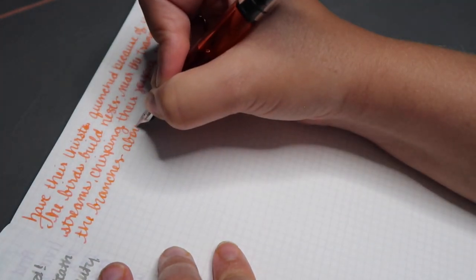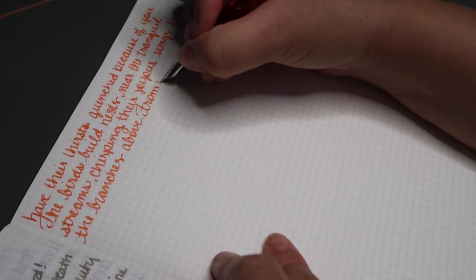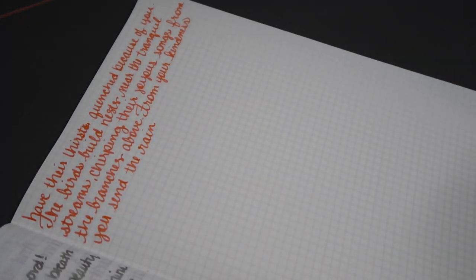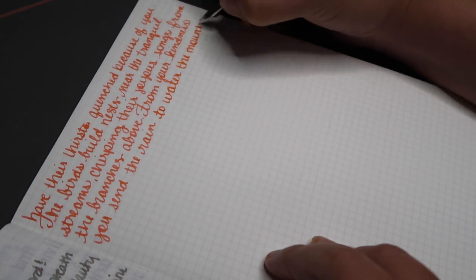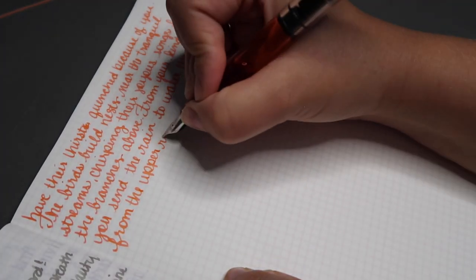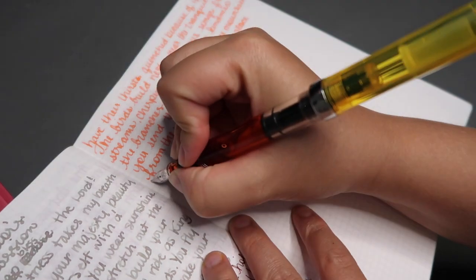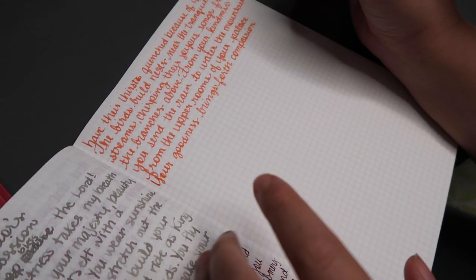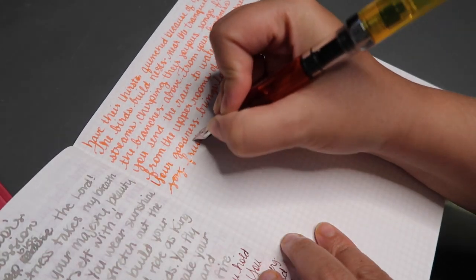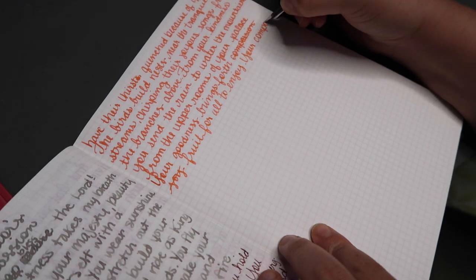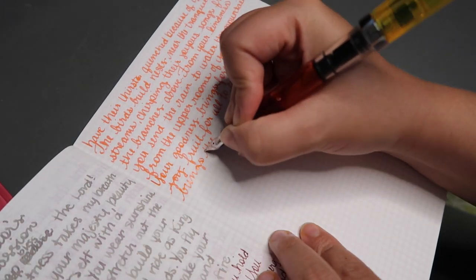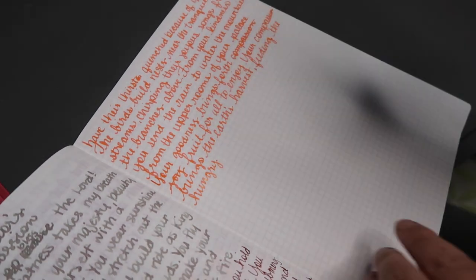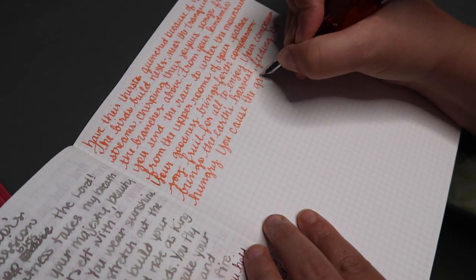From Your kindness, You send the rain to water the mountains from the upper rooms of Your palace. Your goodness brings forth fruit for all to enjoy. Your compassion brings the earth's harvest, feeding the hungry. You cause the grass to grow for livestock, along with the fruit, grains, and vegetables to all mankind. You provide sweet wine to gladden hearts. You give us daily bread to sustain life, giving us glowing health for our bodies.